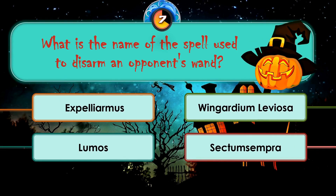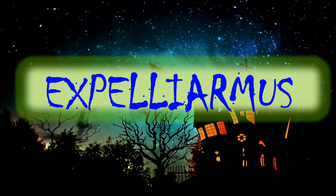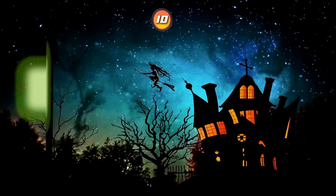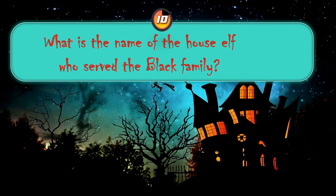Moving to next question: what is the name of the spell used to disarm an opponent's wand? Expellium mos, Wingardium Leviosa, Lumos, Sectumsempra. The correct answer is Expellium mos. Moving to next question: what is the name of the house elf who served the Black family?